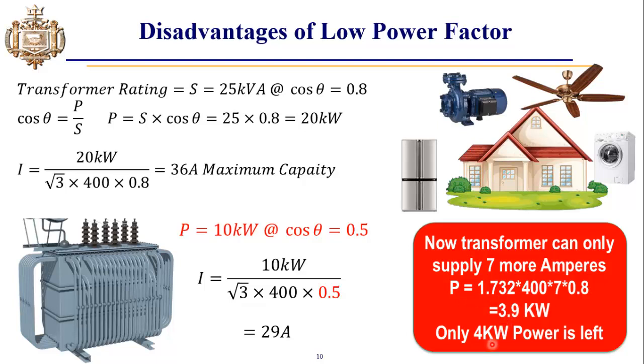What we infer from this information is that we are only drawing 14 kilowatts of useful power from this transformer, and the rest of the power, which is 6 kilowatts, is wasted due to the poor power factor.